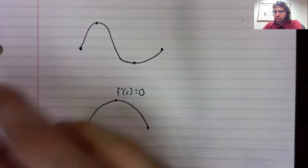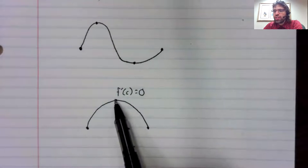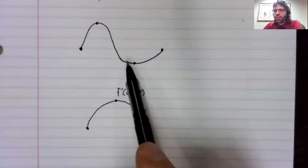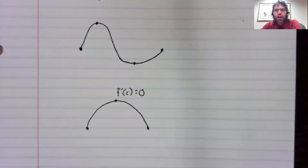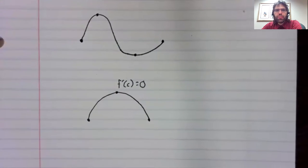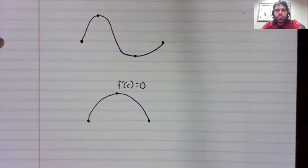And if you look at this, you see these points where the derivative is zero are extreme values. And that's basically the proof of Rolle's theorem.